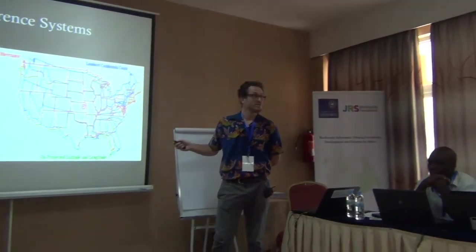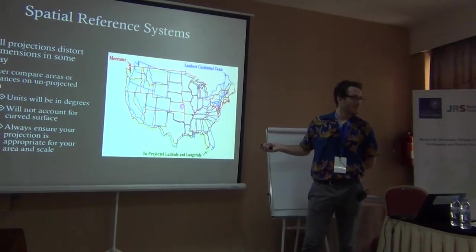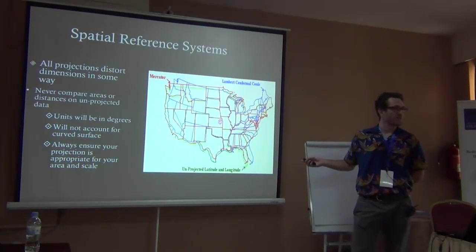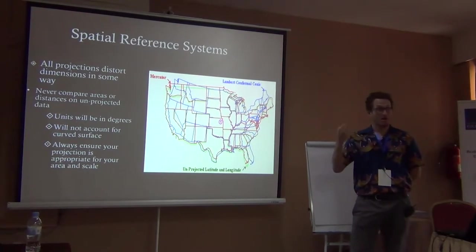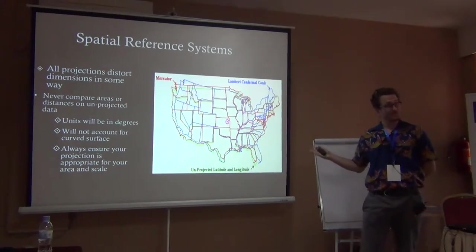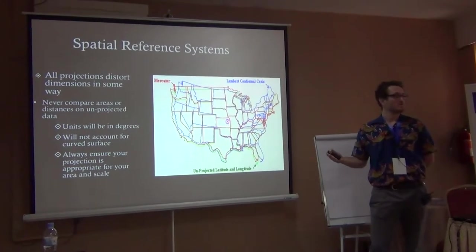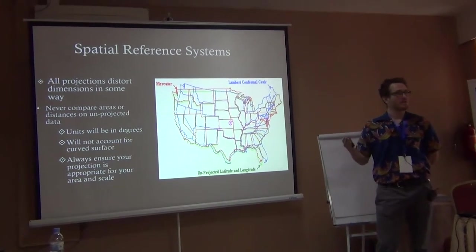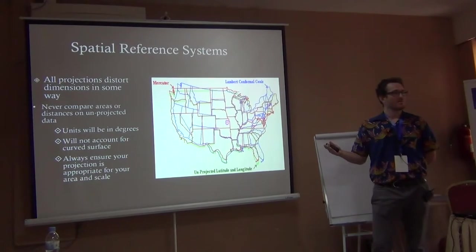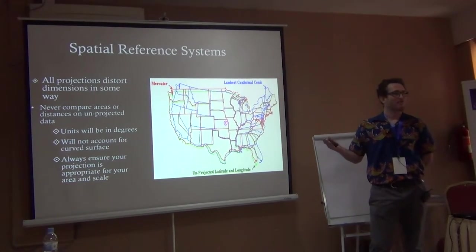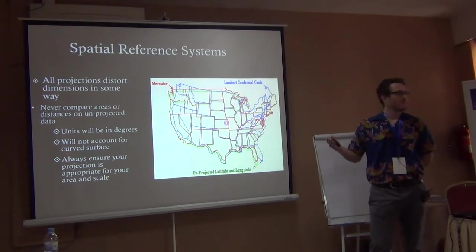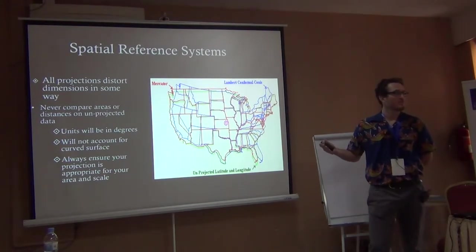When you go to publish, people may notice incorrect projections and question how you got those numbers. Most importantly, when working with spatial data, verify your results and make sure they make sense. If you calculated an area of cropland for Rwanda that is bigger than the entire area of Rwanda, then you probably have the wrong projection system.